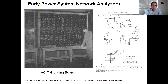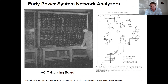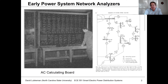You might scale voltages down to something like 120 volts or 12 volts AC. Then you would scale all the line impedances and transformer impedances so that when you got a value for current based on this 12 or 120 volt AC source and applied a scaling factor to it, it would correspond to the current you would have on the real system. In order to do something like this, for each transmission line segment you'd have to have a way of setting an equivalent resistance and reactance for the line.